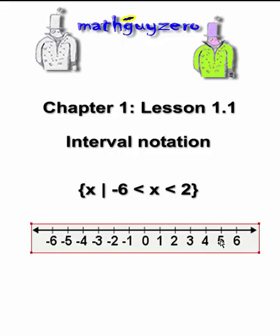So on a number line, what we would do is go ahead and put little unfilled circles where the limitations are, the limiters, whatever you want to call them. So negative 6 on one side and positive 2 on another, and then we would draw a line and connect them.